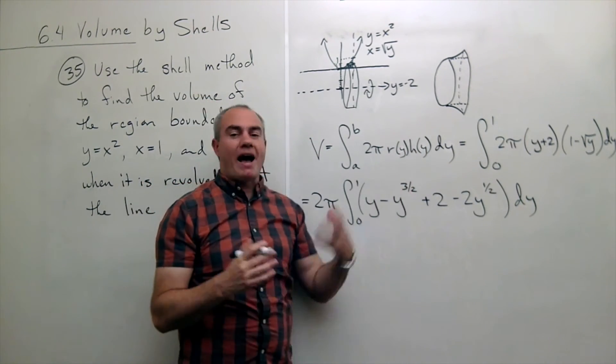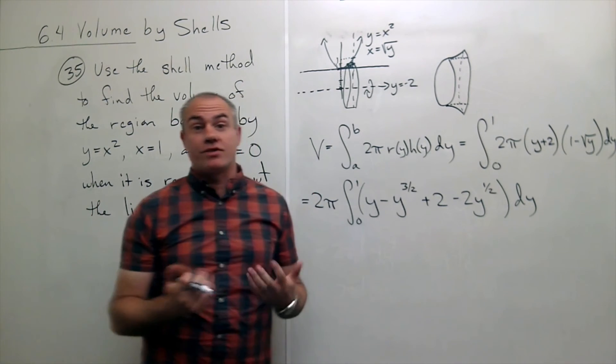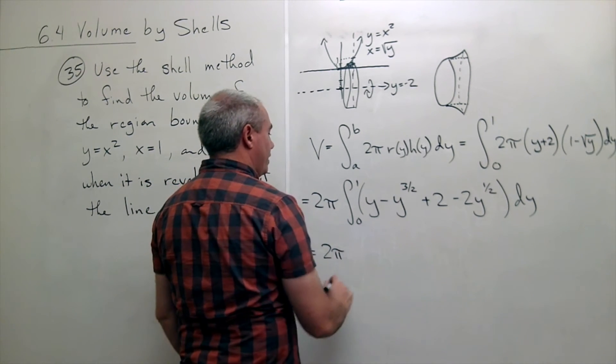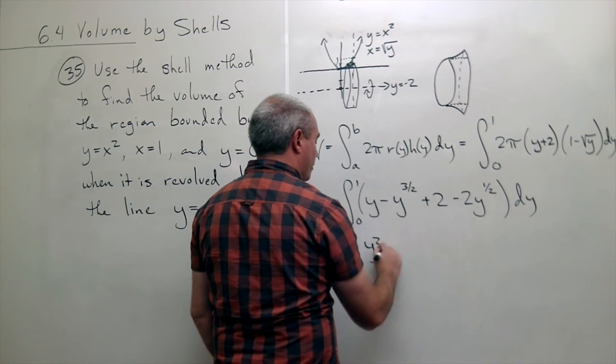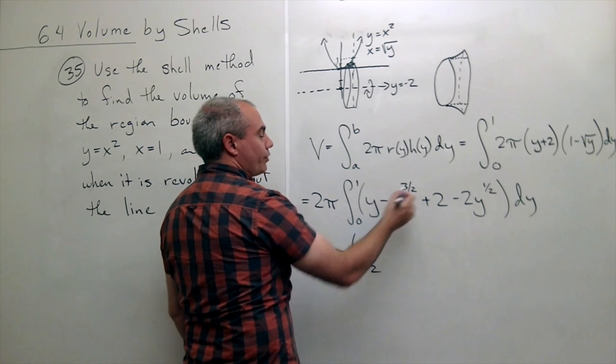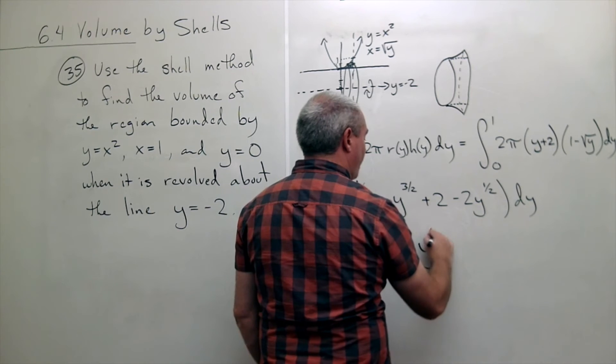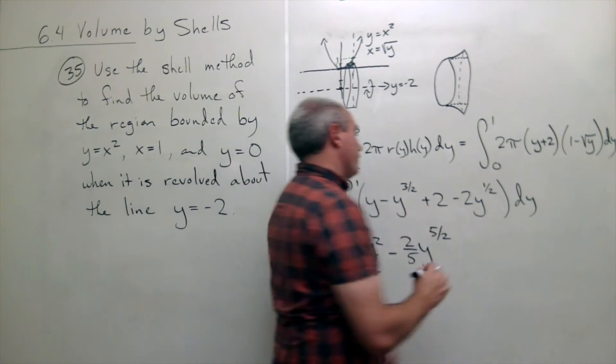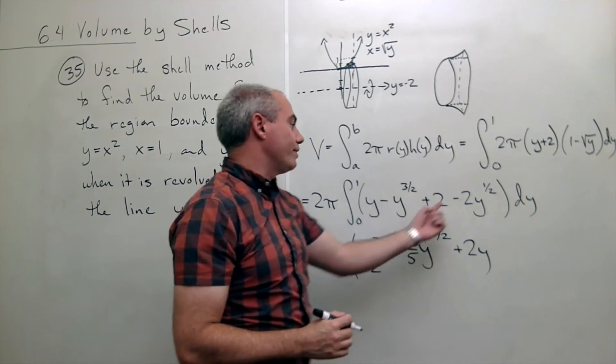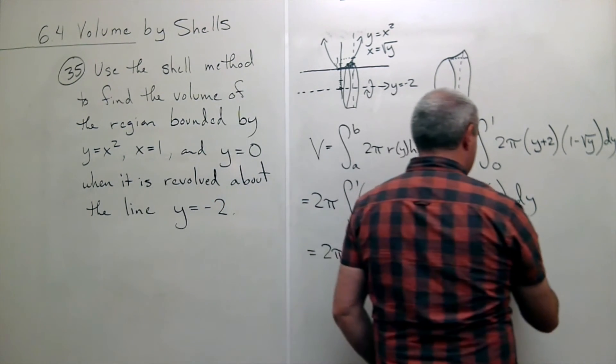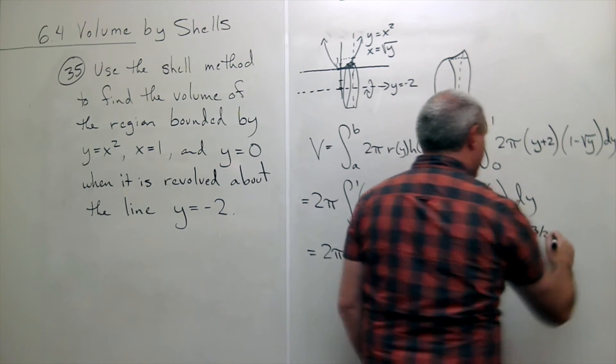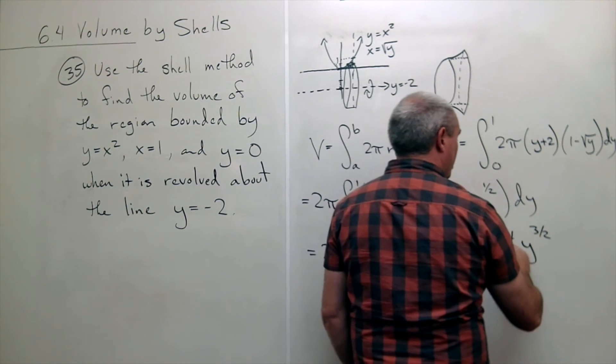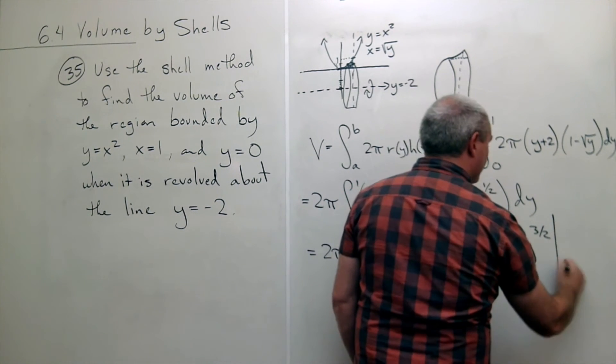I put all of this into a power form, I didn't write any square roots of y, just because I'm about to use the power rule to take the anti-derivative of each. So I get two pi times anti-derivative of y is y squared over two. Anti-derivative of negative y to the three halves is negative y to the five halves divided by five halves, which is the same as multiplying by two fifths. Anti-derivative of two is two y. Anti-derivative of negative two y to the one half, y is going to be to the three halves, and then I have this two multiplied by the reciprocal of three halves, which is two thirds, so I have four thirds. All of that evaluated from zero to one.